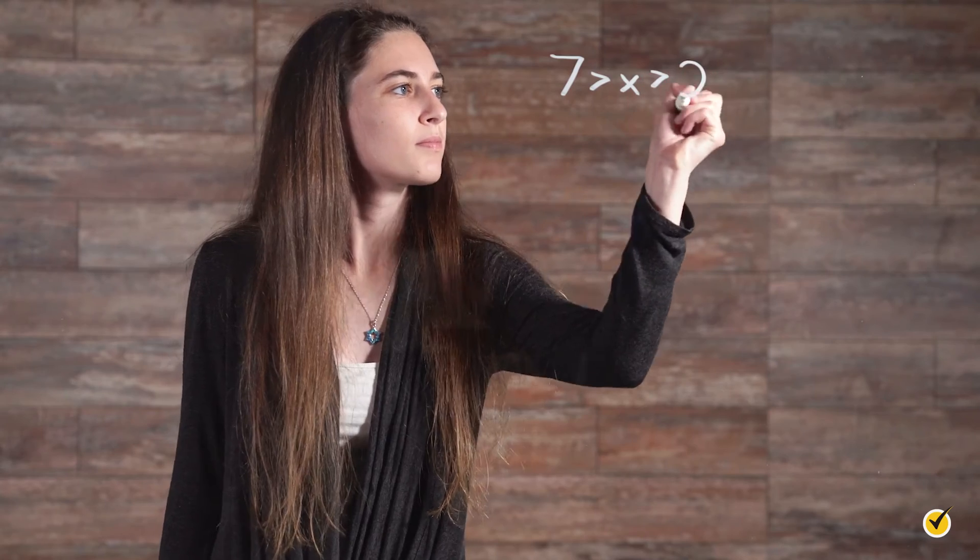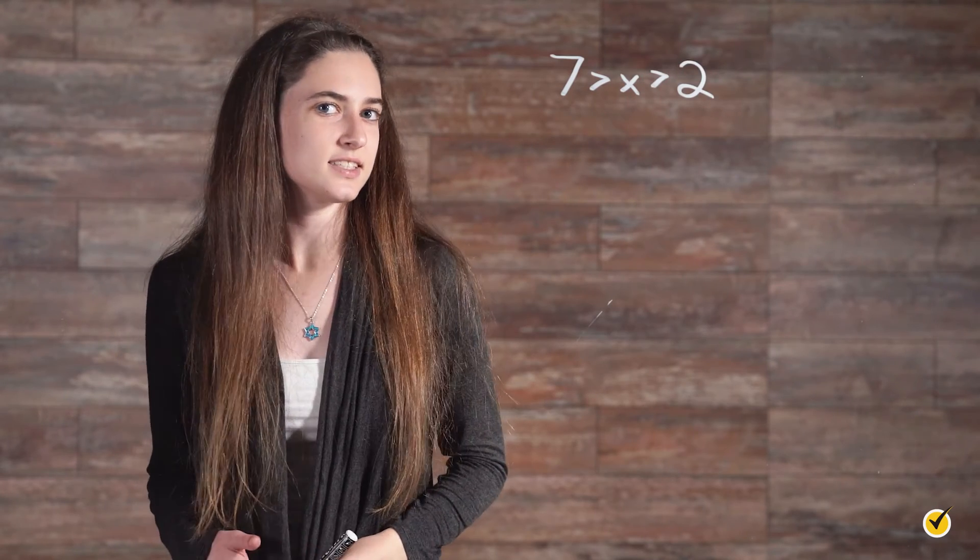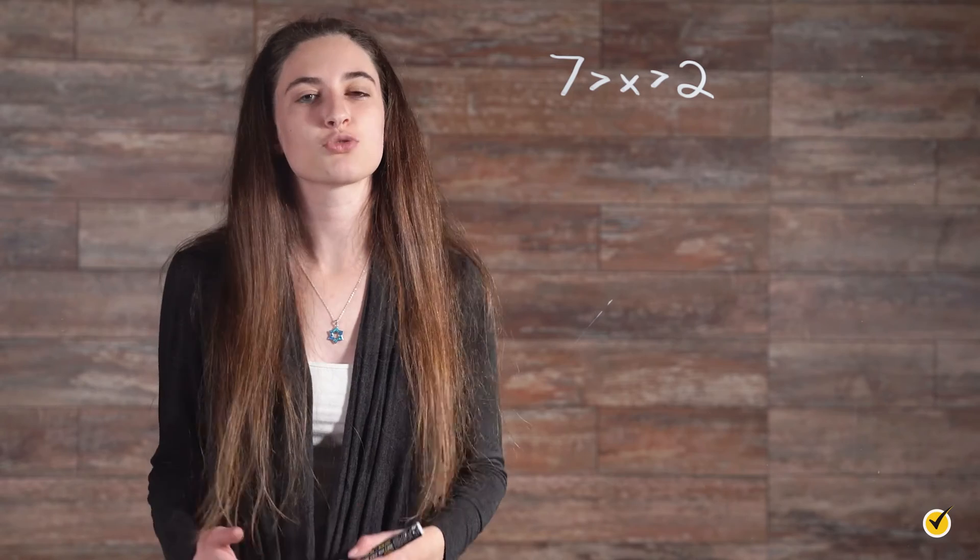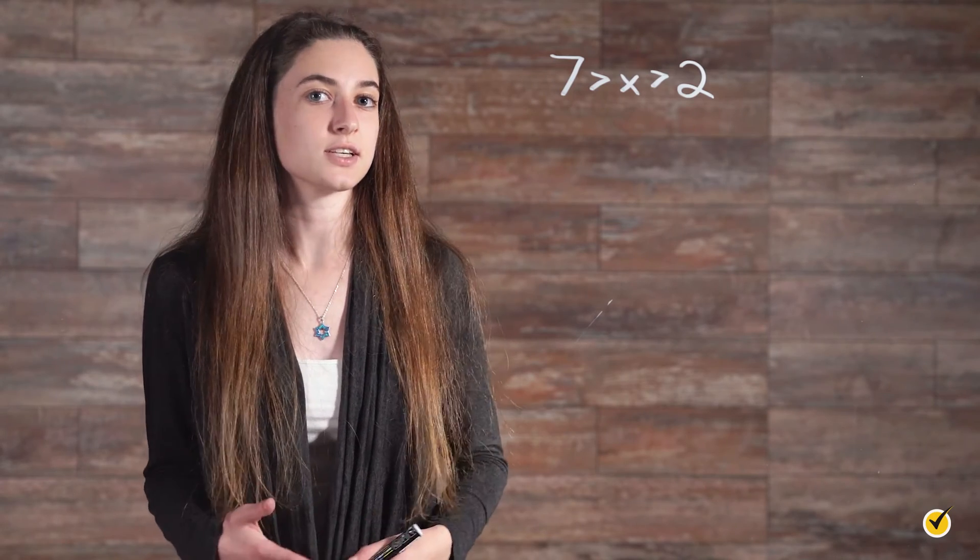Sometimes you will see inequalities containing more than one of these symbols. These are referred to as double inequalities. An example would be this, which suggests that x is less than 7 but greater than 2. This means that 3, 4, 5, and 6 would all be acceptable values of x.